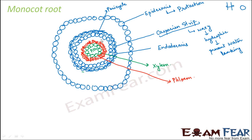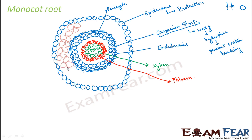You might think the space between the epidermis and endodermis looks empty, but it is not. All that space is filled with parenchyma cells — that is why parenchyma cells are known as the packing tissue. Parenchyma cells have many varieties of shapes: round, oval, or spherical. Their main function is food storage; they store food in the form of sugar or starch.